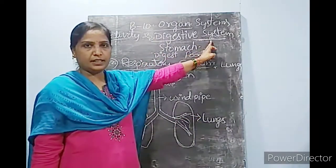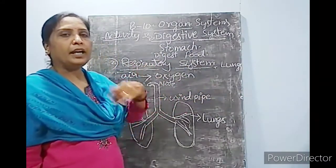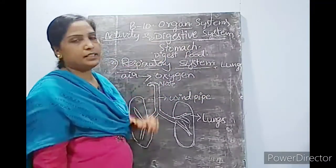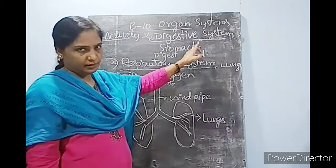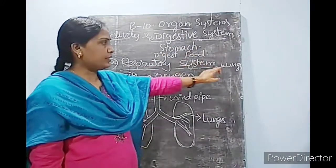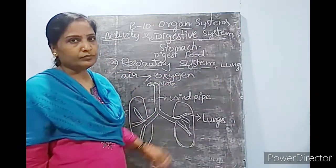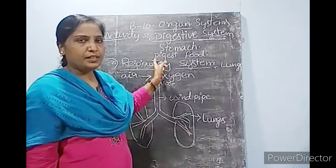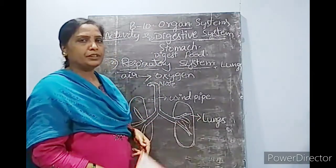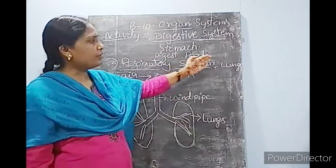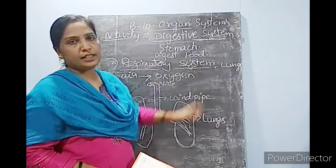Name any two organ systems we discussed. One is the digestive system and the other one is the respiratory system. The important organ in the digestive system is the stomach, and the important organ in the respiratory system is the lungs. You can write these answers in your own words, and spellings and keywords you can take from the board where all the spellings are given.